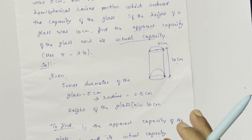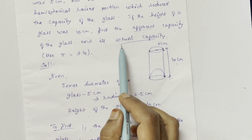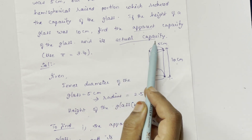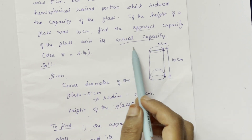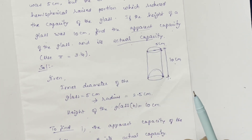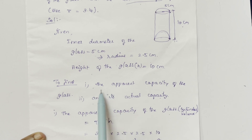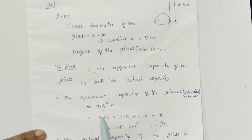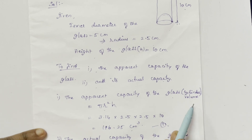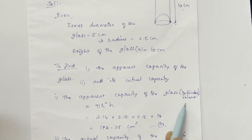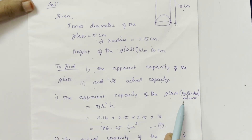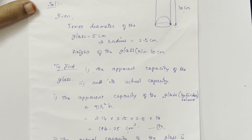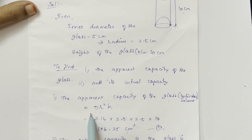First, we calculate the apparent capacity of the glass and then its actual capacity. The apparent capacity: since the glass is in cylindrical shape, we calculate the volume of the cylinder. The formula is π r squared h.